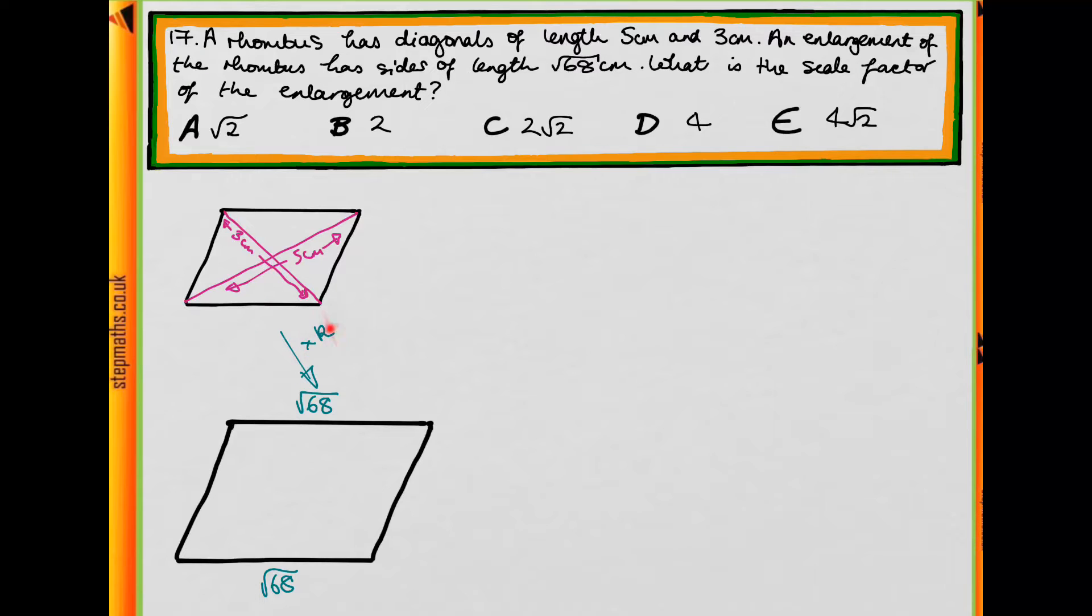And we want to know what we need to multiply a side length of this by to get to a side length of this, the scale factor. And we're going to call that K.